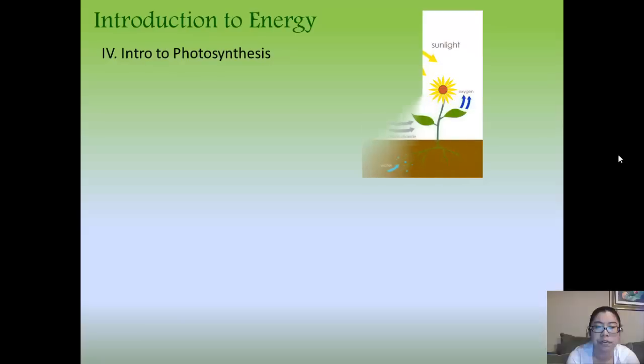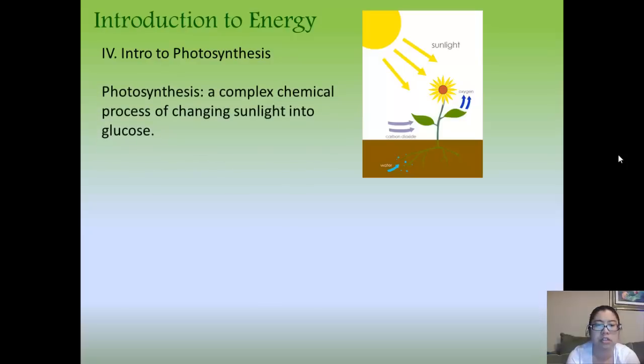Introduction to photosynthesis. In general, photosynthesis is: you take sunlight with carbon dioxide and water, and you get oxygen and glucose. So photosynthesis is a complex chemical process of changing sunlight into glucose.